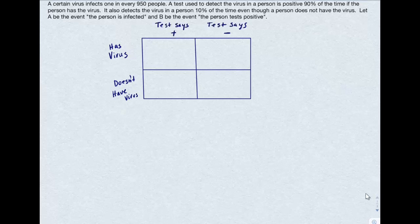The columns - the first one is the test is positive, and the second column is the test is negative.